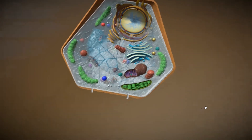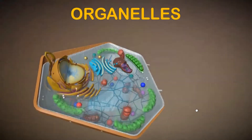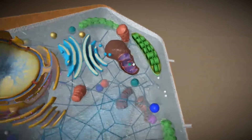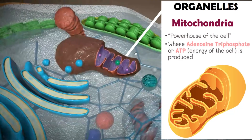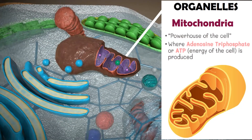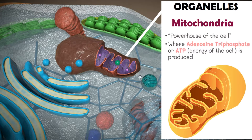The first organelle we are going to discuss is the mitochondrion, or mitochondria in plural form. It is one of the largest organelles within a cell. It is also known as the powerhouse of the cell, since it is where the energy of the cell — adenosine triphosphate, or ATP for short — is produced.